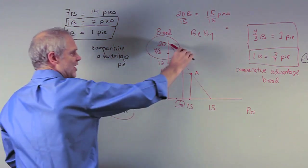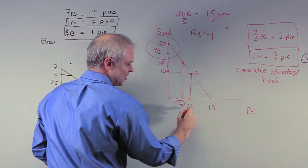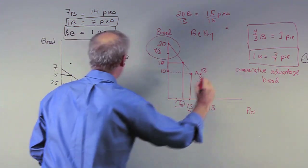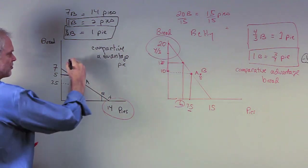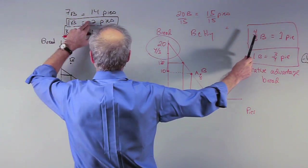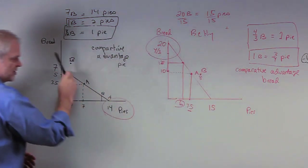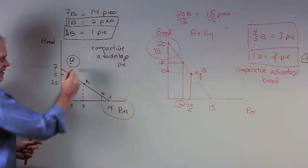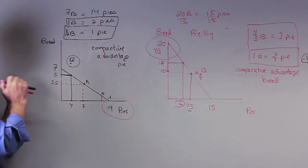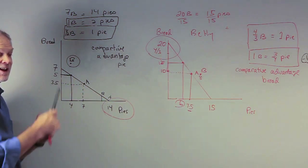That's all Betty could do without trade — 12 breads and six pies. But now Barney gives her 10 pies, getting her well beyond what she could normally produce. In other words, Betty gets to go to point B and Barney gets to go to point B, if they trade somewhere between those two prices. Any price between two pies and three-quarters of a pie per bread will allow both individuals to consume beyond their production possibility frontier.